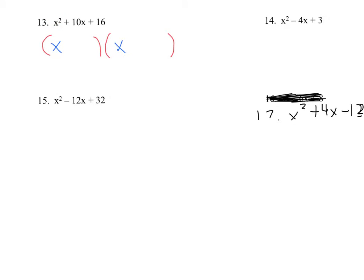And then we're going to ask ourselves, okay, we're trying to multiply to a positive 16. What two numbers will multiply to give us a positive 16? But when we add them together, we get a positive 10. So we're trying to multiply to a positive 16, but add up to a positive 10.